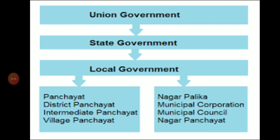Union government is also known as central government. This is the government at the center and it takes major decisions of governance for the entire country. The central government looks into the affairs of national importance like defense, railways, and national development, and so on. It also has power over the states.